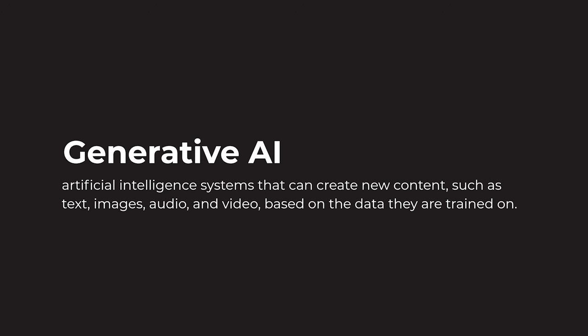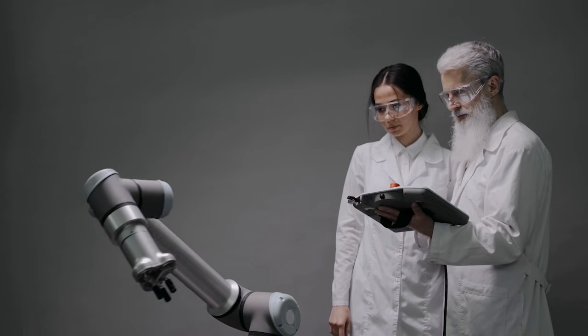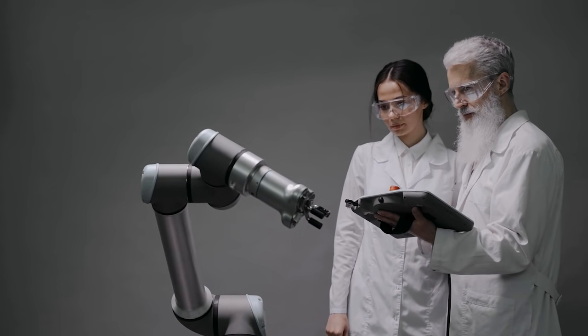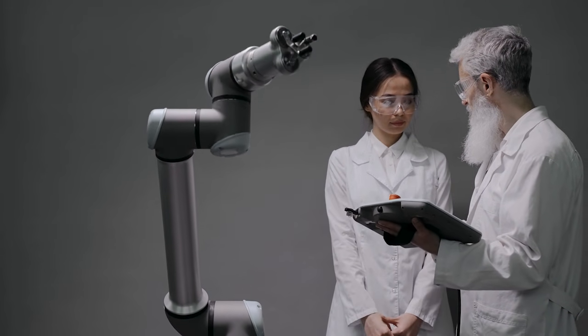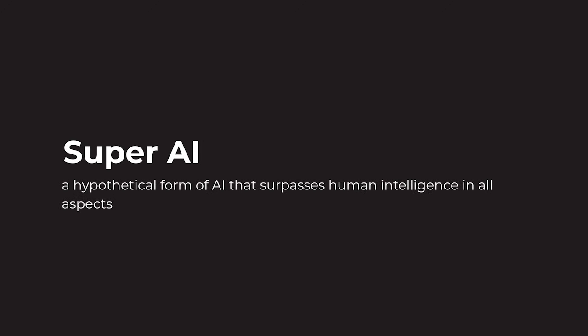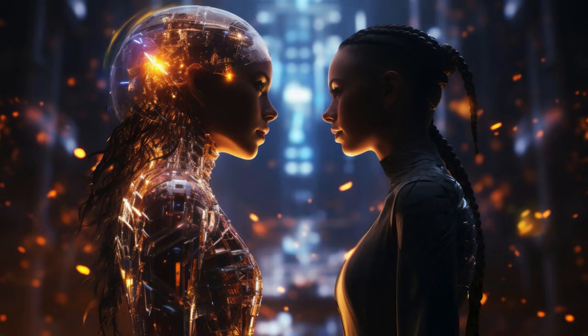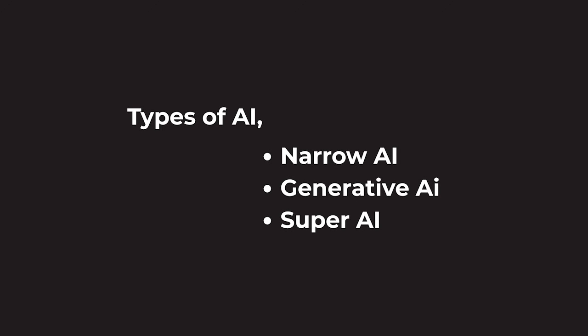The next level is General AI. General AI means human-level capability — still in research. For example, robots that can perform surgeries like a doctor. The third type is Super AI, which is not yet achieved — this is the future. You can think of it like Jarvis or advanced robots. If a human has a super power, that is Super AI. So there are three types of AI, and currently we are at Narrow AI.